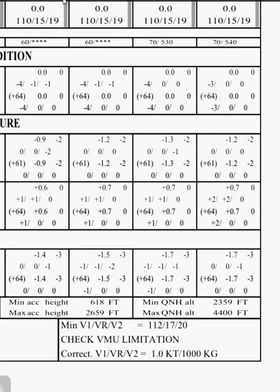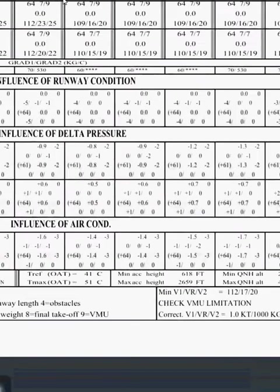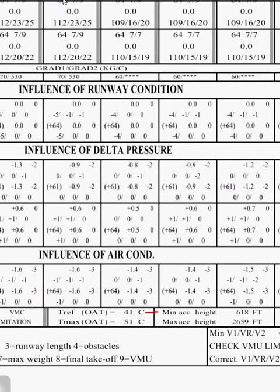These values here signify single engine operation procedures — you have to accelerate at a certain altitude. Generally for the Airbus A320 it is 1500 feet as a standard value. But if the engine is still not secured above 1500 feet, you can go up to 2659 feet above ground level and then level off — that's the maximum acceleration height. On QNH it is 4400. T-ref reference temperature is 41 and maximum temperature is 51.